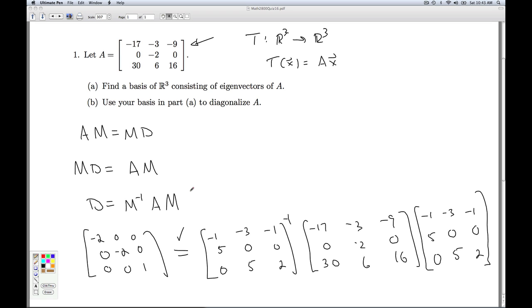M is a change of basis matrix. A is a representation of a transformation, and then M inverse is another change of basis matrix. That means that D is a matrix representation of the same linear transformation. But with respect to what basis, that's what I want you to think about. Anyway, that'll do it for quiz 16.